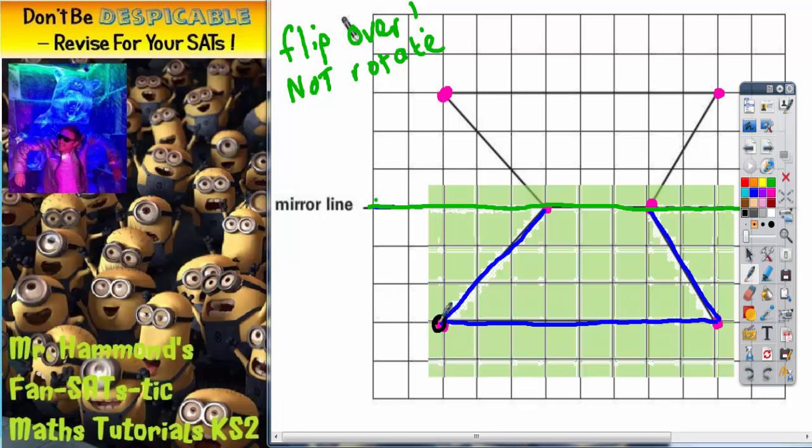Peel this corner up, mark the corner on. Peel this up, mark the corner on. Once you've got the four corners you can join it up.